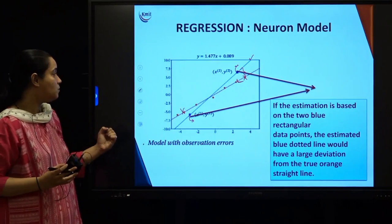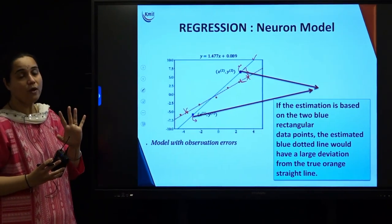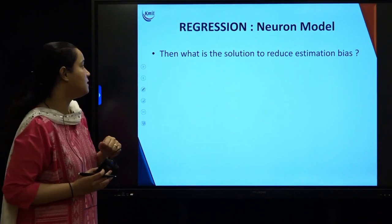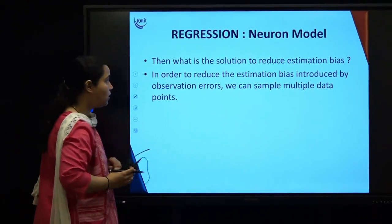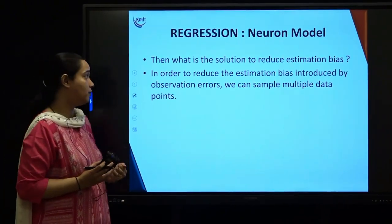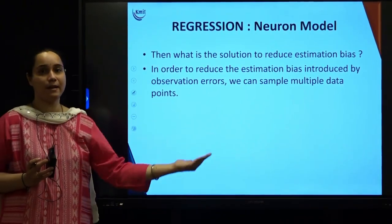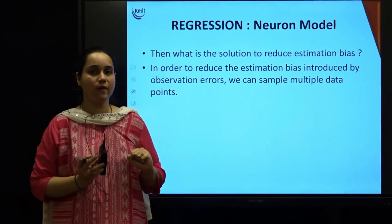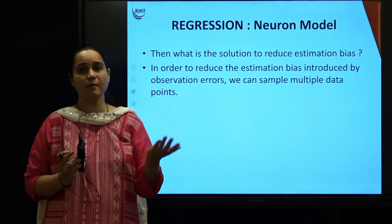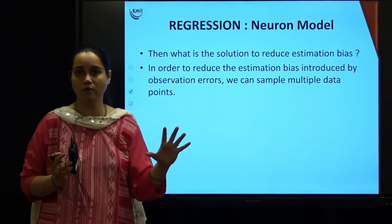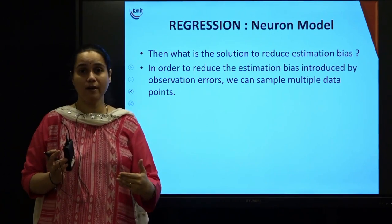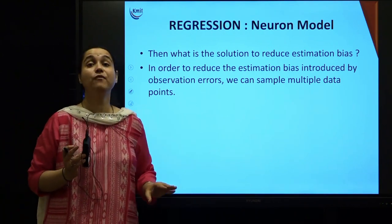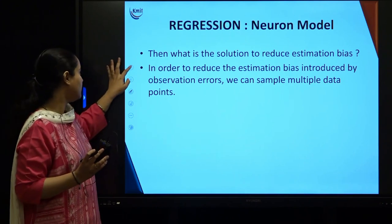You can see there is a large estimation bias if there is more amount of observation error. So what is the solution? How do I reduce this estimation bias? In order to reduce it, you must sample multiple data points. Till now we were considering only two points sufficient to obtain the weight and bias, but practically with observation errors, it introduces a large estimation bias. So now, multiple data points have to be sampled to get a perfect line of the simple linear model.